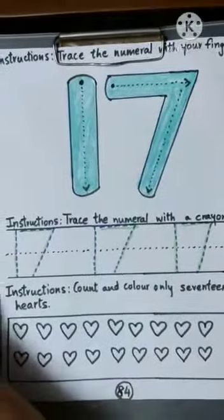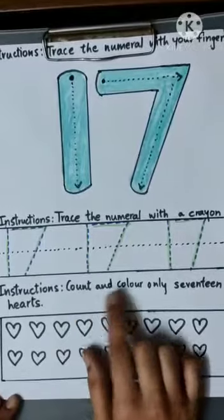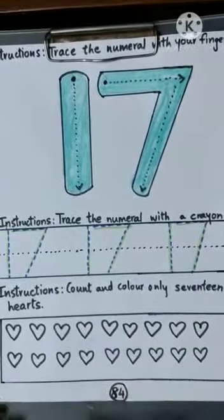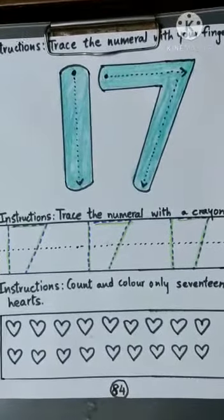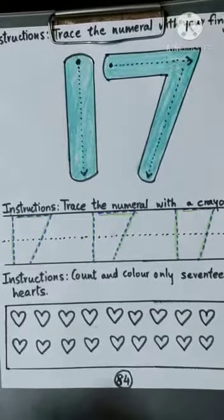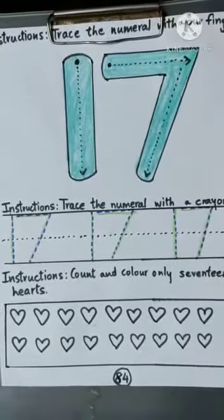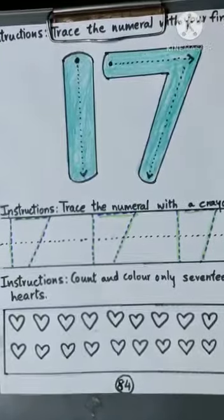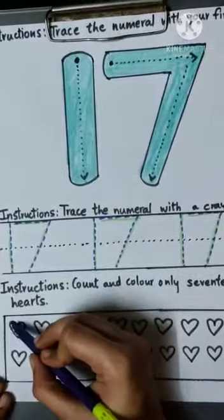Now take a look at the third instruction: Count and color only 17 hearts. We have to count as well as color. But how many hearts we have to color? Only 17. So let's start counting.